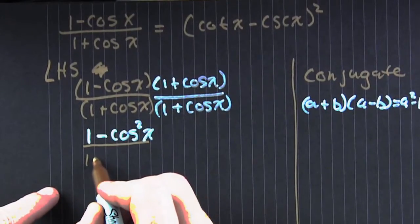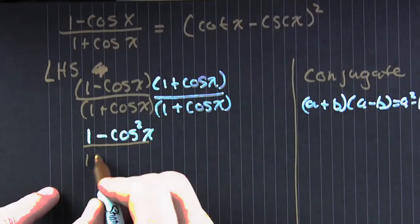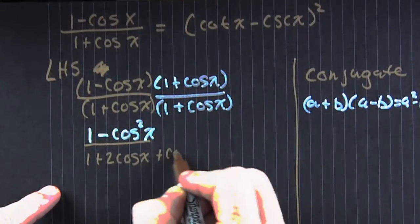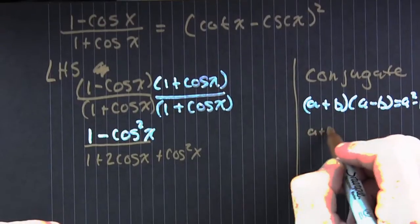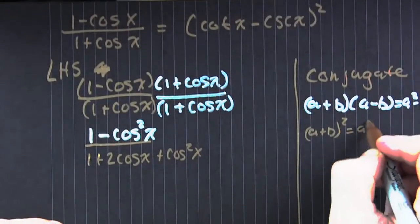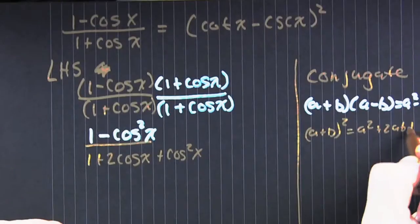In the denominator, go ahead. Perfect square. Show me. A plus B squared is A squared plus 2AB plus B squared. Now, where are we at?